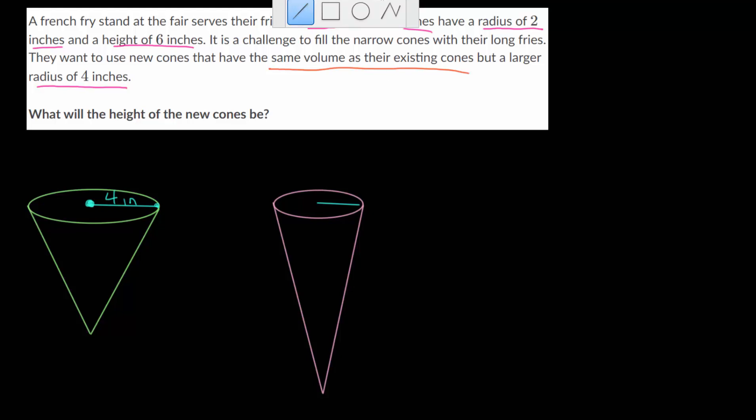We know the radius of this cone is 2 inches, and we're told what the height is. The height of this original cone is 6 inches. Remember, the height, we can call that H, is perpendicular to the base and runs all the way to the bottom point here.